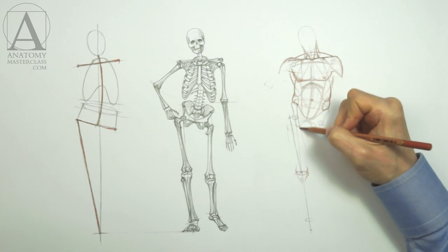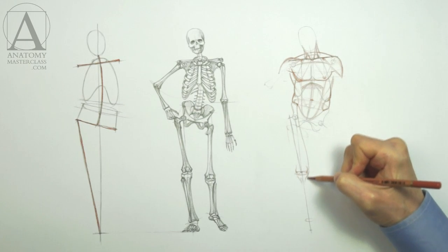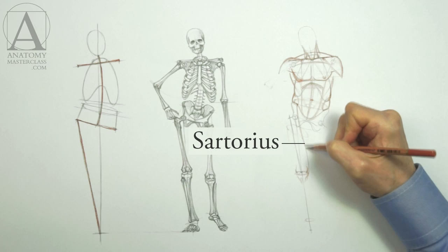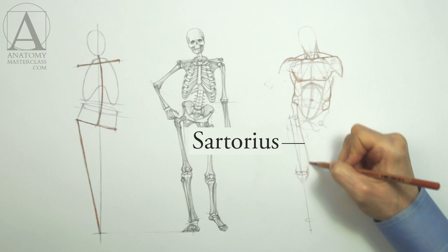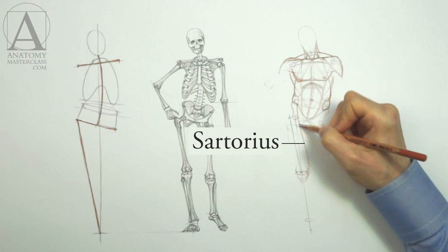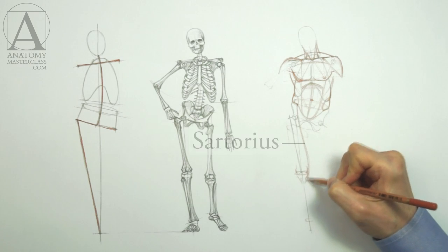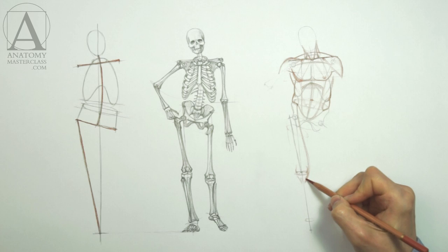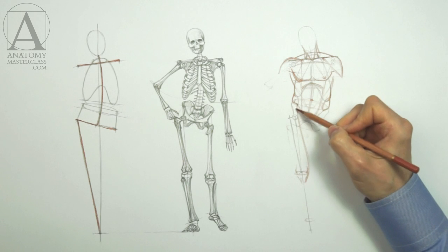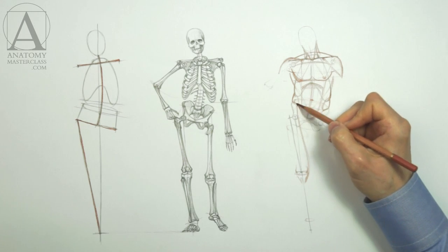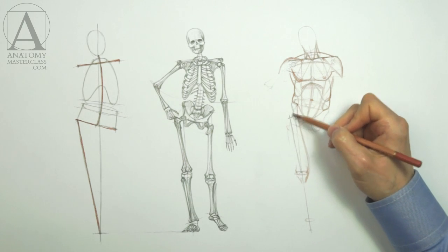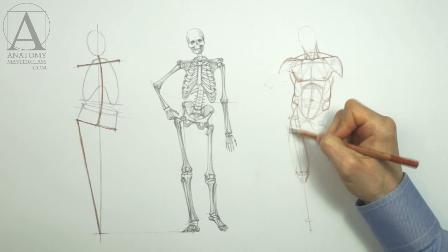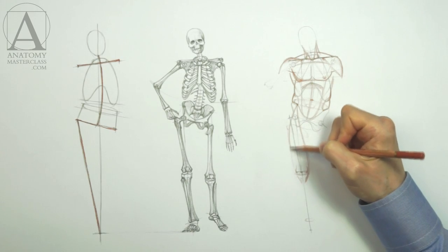One of the muscles that shape the appearance of the upper leg is the sartorius. It is the longest muscle in the human body. This muscle resembles a strap and allows one to sit in a cross-legged position. It is also called the tailor's muscle.